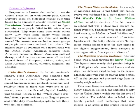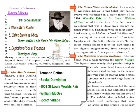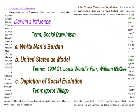In the subsection 'Darwin's Influence,' Dr. Nazel has even more to say — enough to justify dividing this section into three finer sections: one, white man's burden; two, the United States as the model; and three, the depiction of social Darwinism. With these divisions the author adds four special vocabulary terms: social Darwinism, the 1904 St. Louis World's Fair, William McGee, and the Igorot Village. These three points along with the vocabulary terms more fully explain what Dr. Ross Nazel means by 'Darwin's influence.'